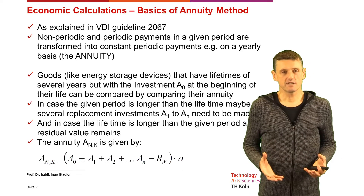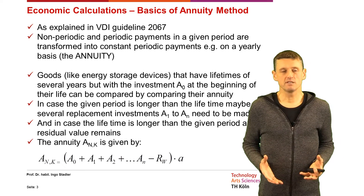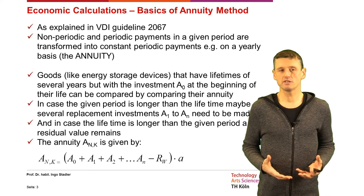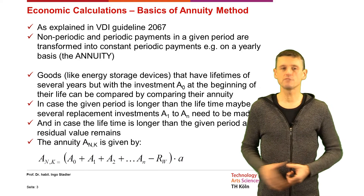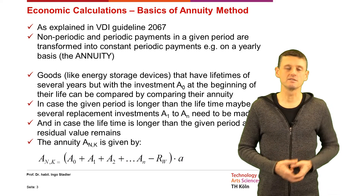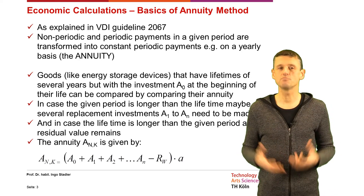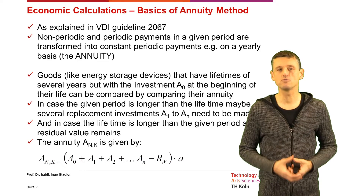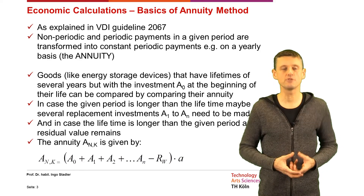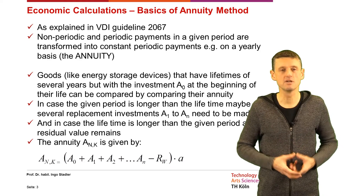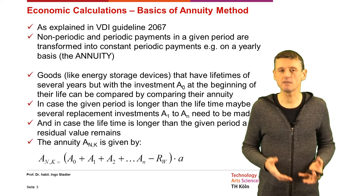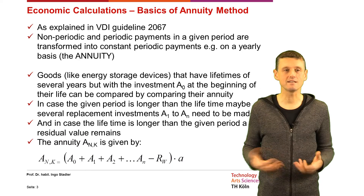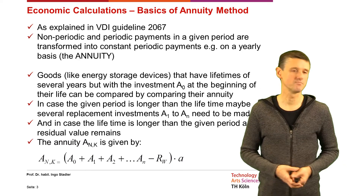This gives us a way to transform non-periodic and periodic payments in a given period into constant periodic payments — for example on a yearly basis — and that is then the annuity.